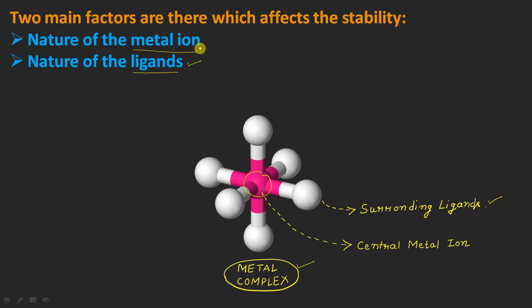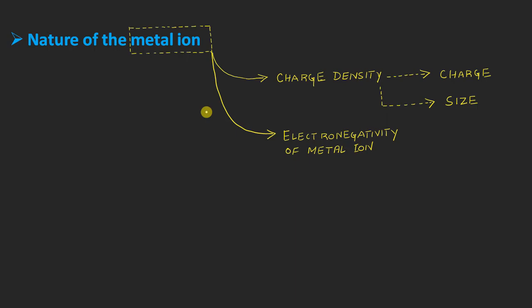I want to devote this whole lecture to the very first factor — the nature of the metal ion. The nature of the ligands I will be discussing in a separate lecture from this series. So, the first important thing in this case is the charge density of the metal ion, which will have a great influence on the stability of any metal complex.